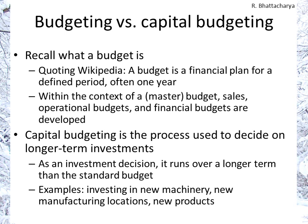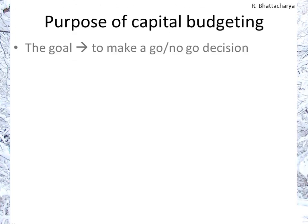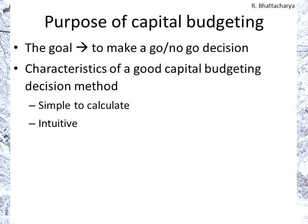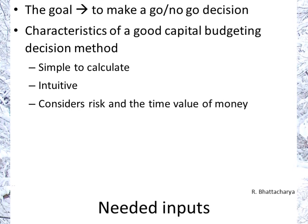What it requires is a multi-year decision. The purpose of capital budgeting is to decide whether to go for a project or not. The characteristics of a good decision method are: A, it's simple to calculate; B, it's intuitive; and C, it considers risk and the time value of money, which we've already covered in earlier portions of the finance course.